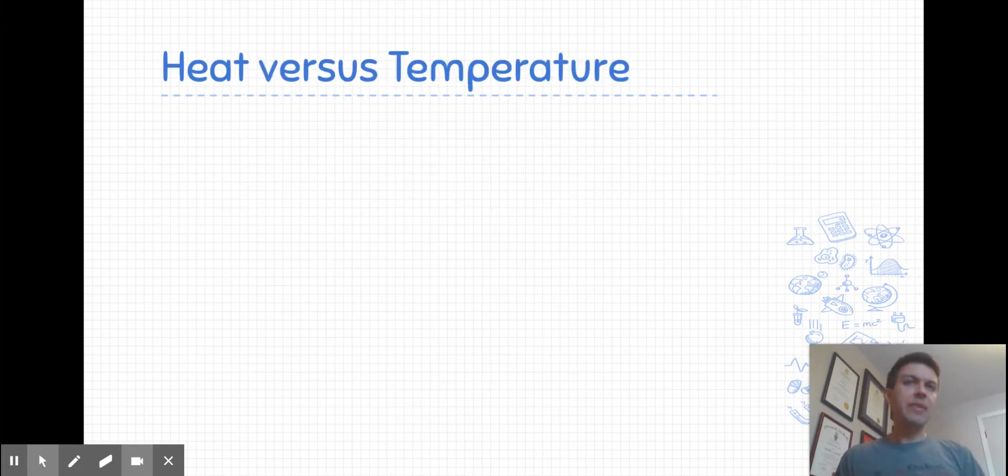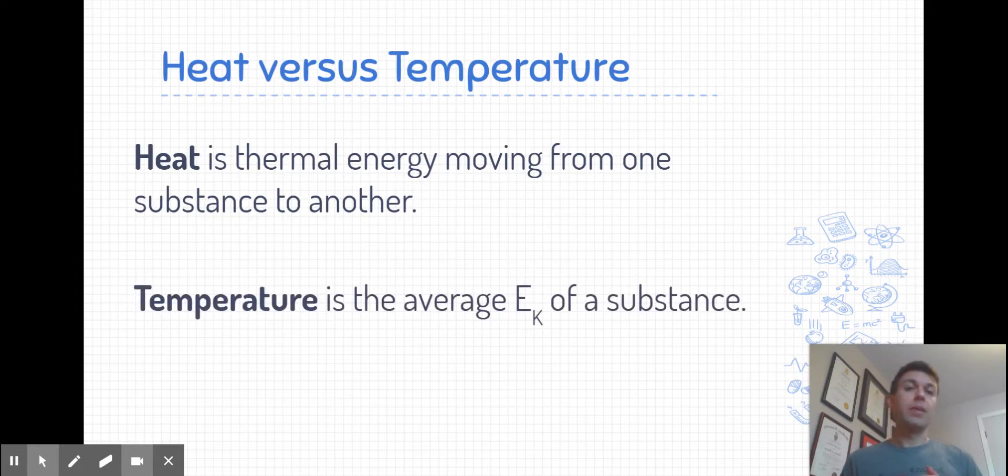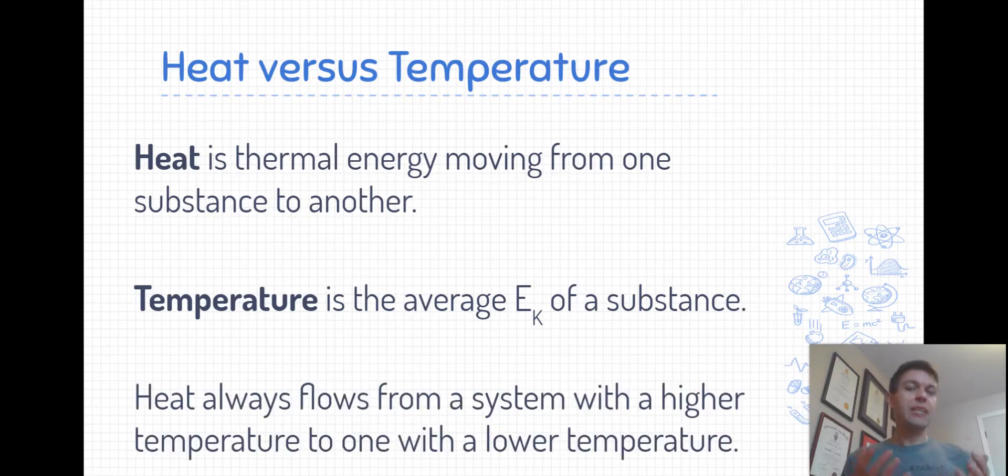Now that we've described the different types of energy within a chemical substance, let's clarify and compare two common terms that are often misused. In chemistry, when we use the term heat, heat is referring to thermal energy in motion. It's the internal energy that's being transferred from one chemical substance to another chemical substance. Temperature is the average kinetic energy of a substance. So we take all those particles and take their average kinetic energy, and that gives us its temperature.